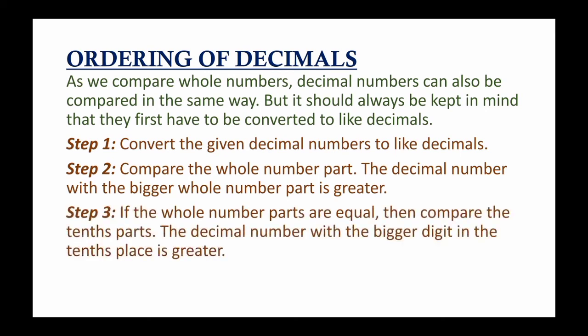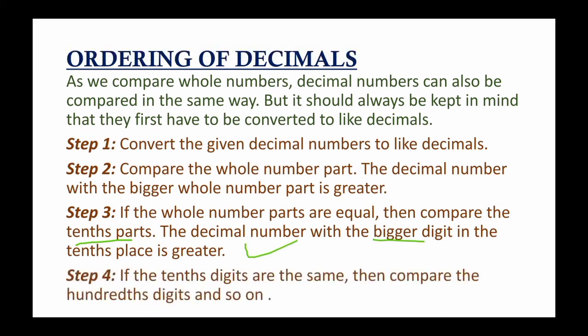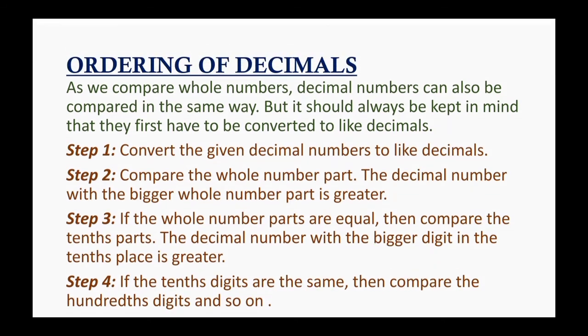If the whole parts are equal, then compare the first digit after the decimal point — the tenths place. The number with the bigger digit in the tenths place is greater. If the tenths digits are also the same, move to the hundredths place. If that is also the same, move to the thousandths place, then the ten-thousandths place, and so on. Compare digit by digit from left to right until you find a difference.